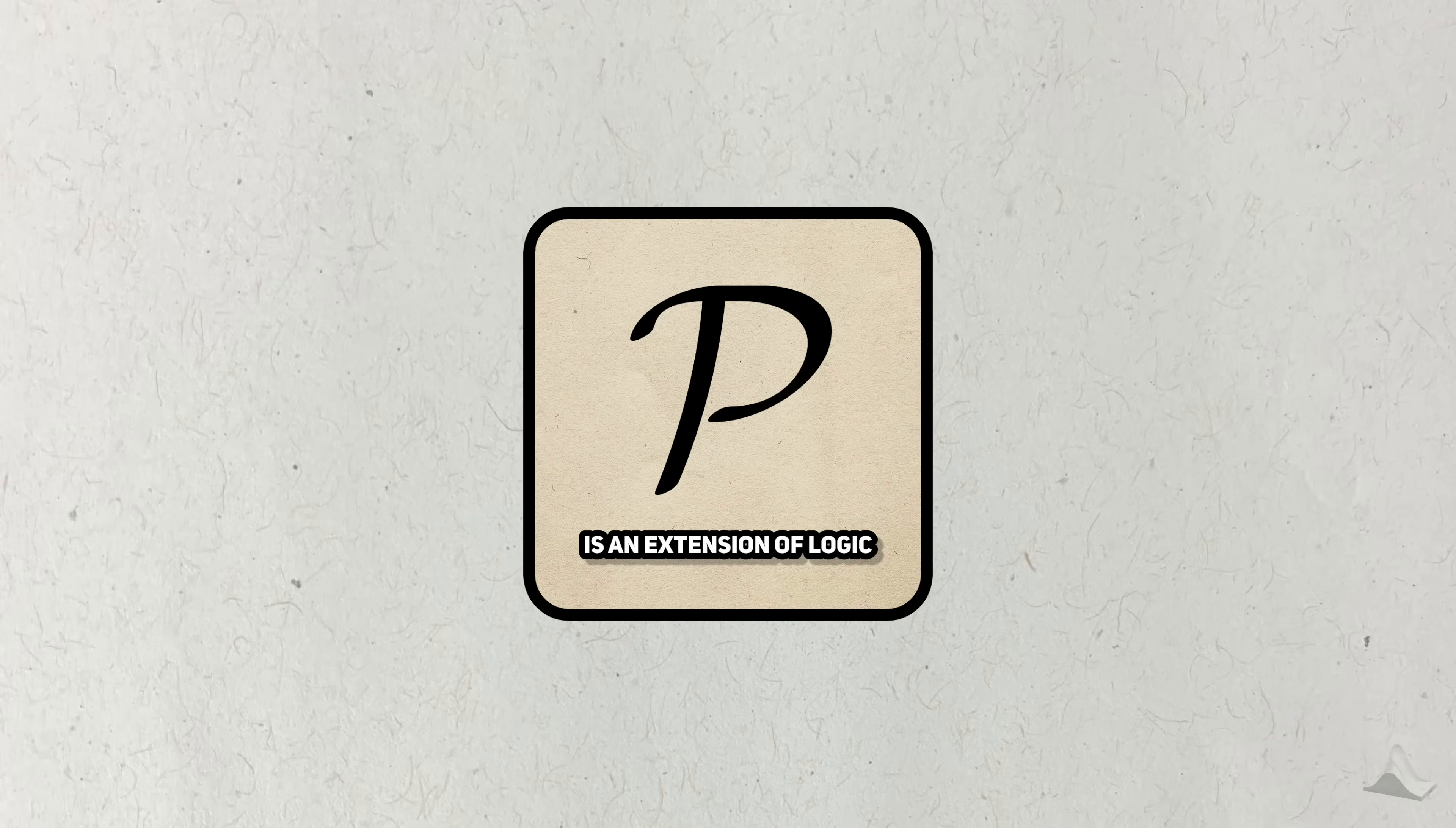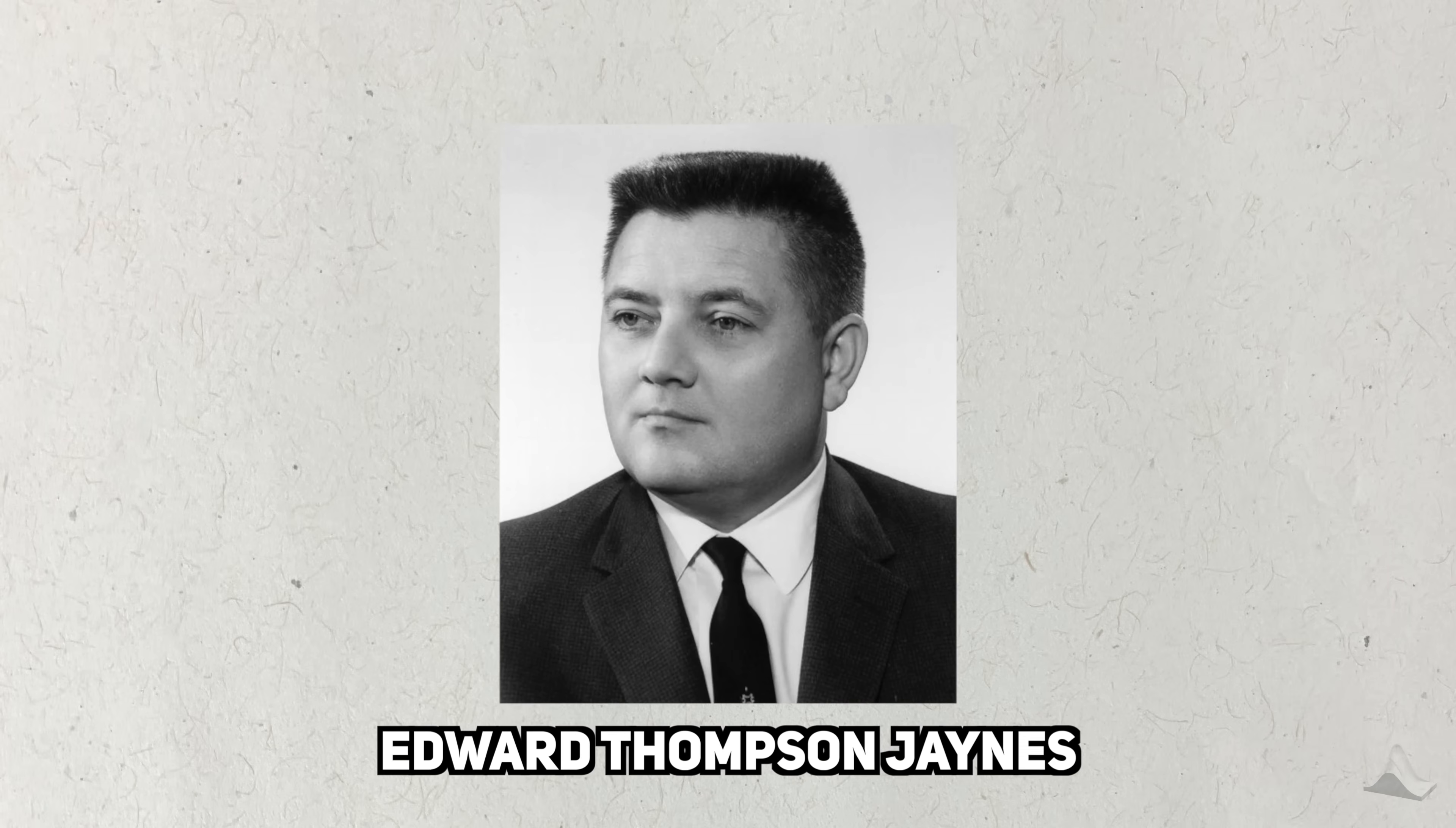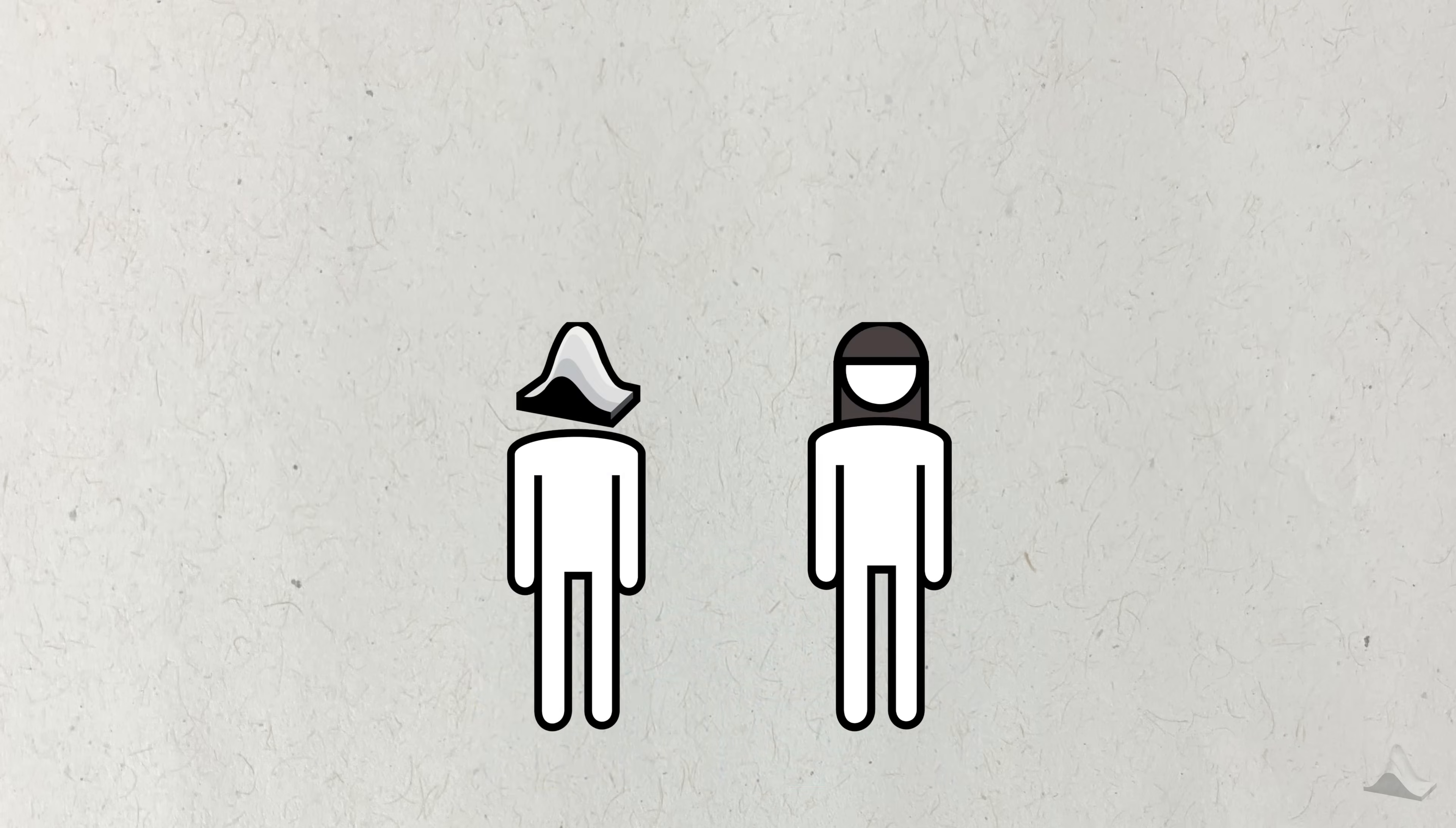To me, the Monty Hall problem demonstrates the value of what's called the logical interpretation of probability, which was pioneered by American physicist Edward Thompson Jaynes. The interpretation gets its name from the fact that Jaynes essentially rebuilt the Bayesian framework of statistics on the basis of logic and not gambling.